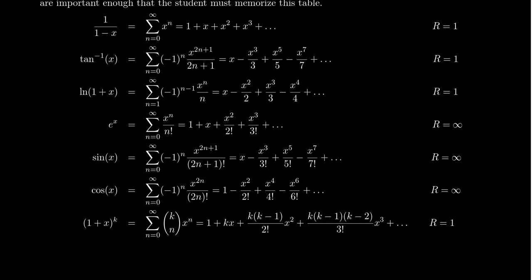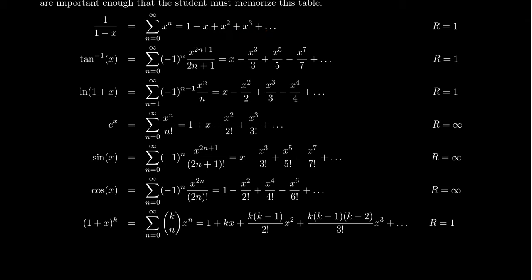This discussion began with us talking about geometric series. The function 1 over 1 minus x can be represented as a power series: the sum from n equals 0 to infinity of x to the n. In expanded form, this looks like 1 plus x plus x squared plus x cubed plus x to the 4th, etc. The geometric series formula has a radius of convergence of 1. If you substitute something like y over 4 for x, you can get a larger radius of 4, since this variable can be replaced with something more complicated.